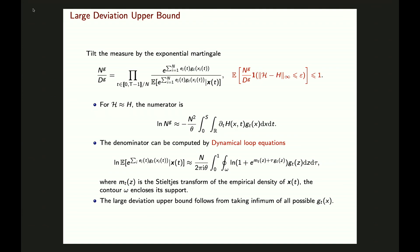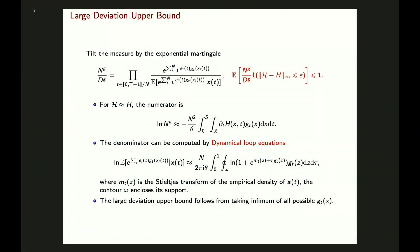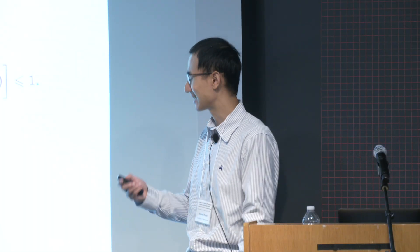To use the dynamical loop equation, we need gₜ to be analytic in a neighborhood of the real axis. If that is the case, we can study this conditional expectation: taking the log, it is given by a contour integral depending on gₜ, where mₜ is the Stieltjes transform of the empirical density of xₜ, and the contour encloses the support of the empirical density. Once we have both numerator and denominator in terms of h, we pull it out and take the infimum over all possible gₜ, giving the large deviation upper bound.